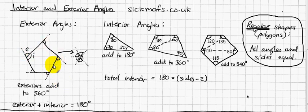Okay, so this exterior angle plus that, plus that, plus that exterior angle add up to 360.